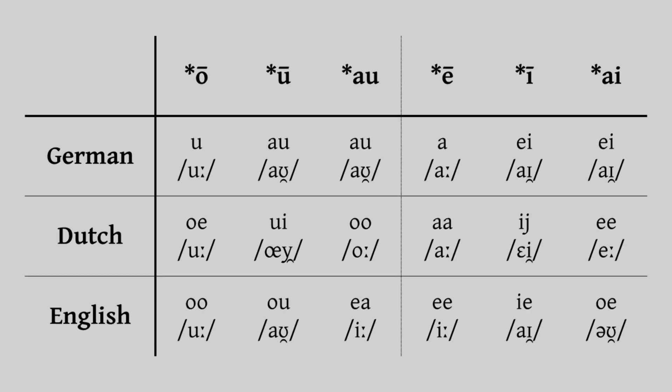So, that brings us to the end. Overall, you can see how these sounds are related and there are strong similarities across all three languages, but there are nevertheless some peculiarities. As I mentioned, we've only looked at the main outcome for each of these vowels so the system is actually far more complex than it may seem here, but hopefully this has been a good introduction to the subject. Thank you for watching — I'll see you in the next video.